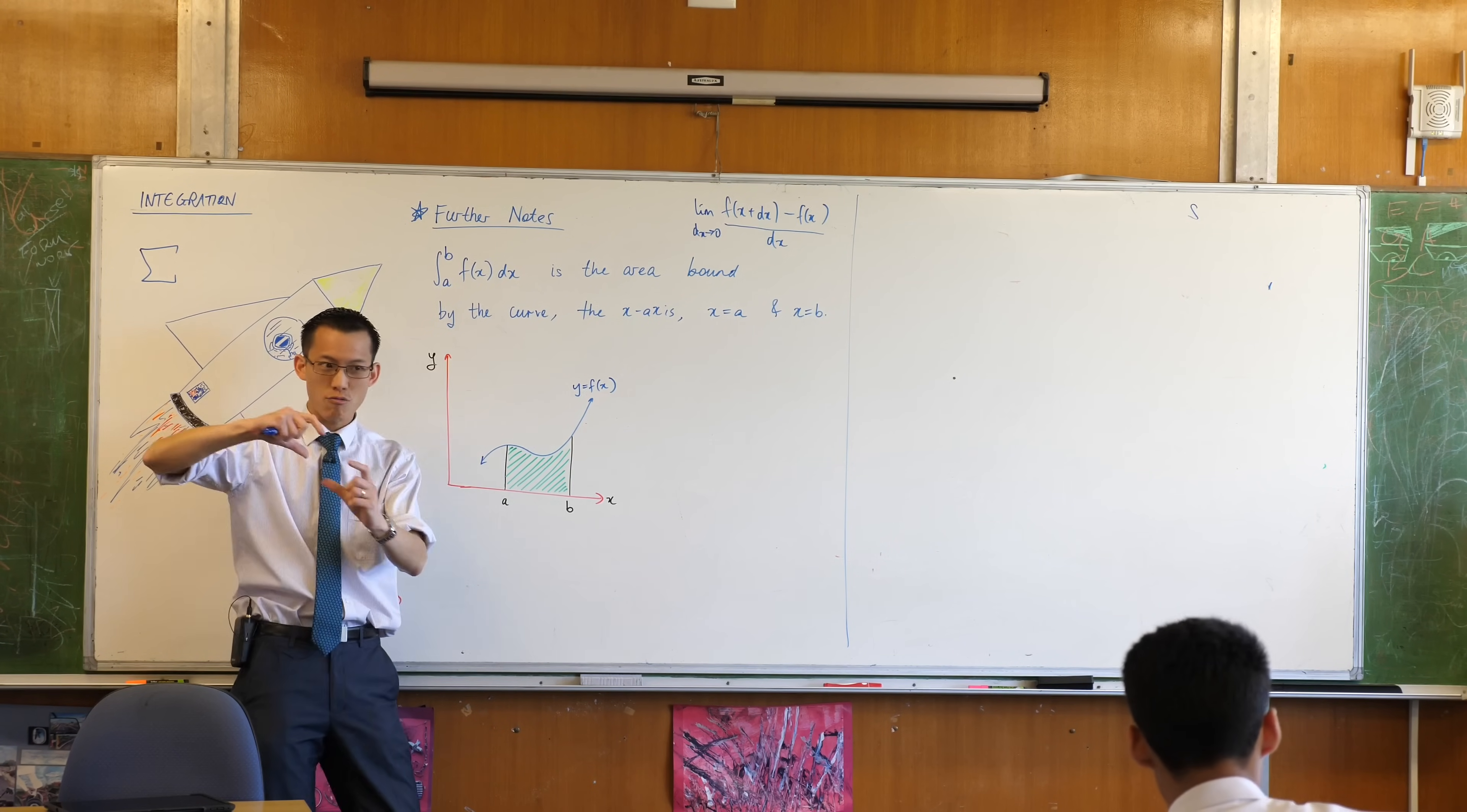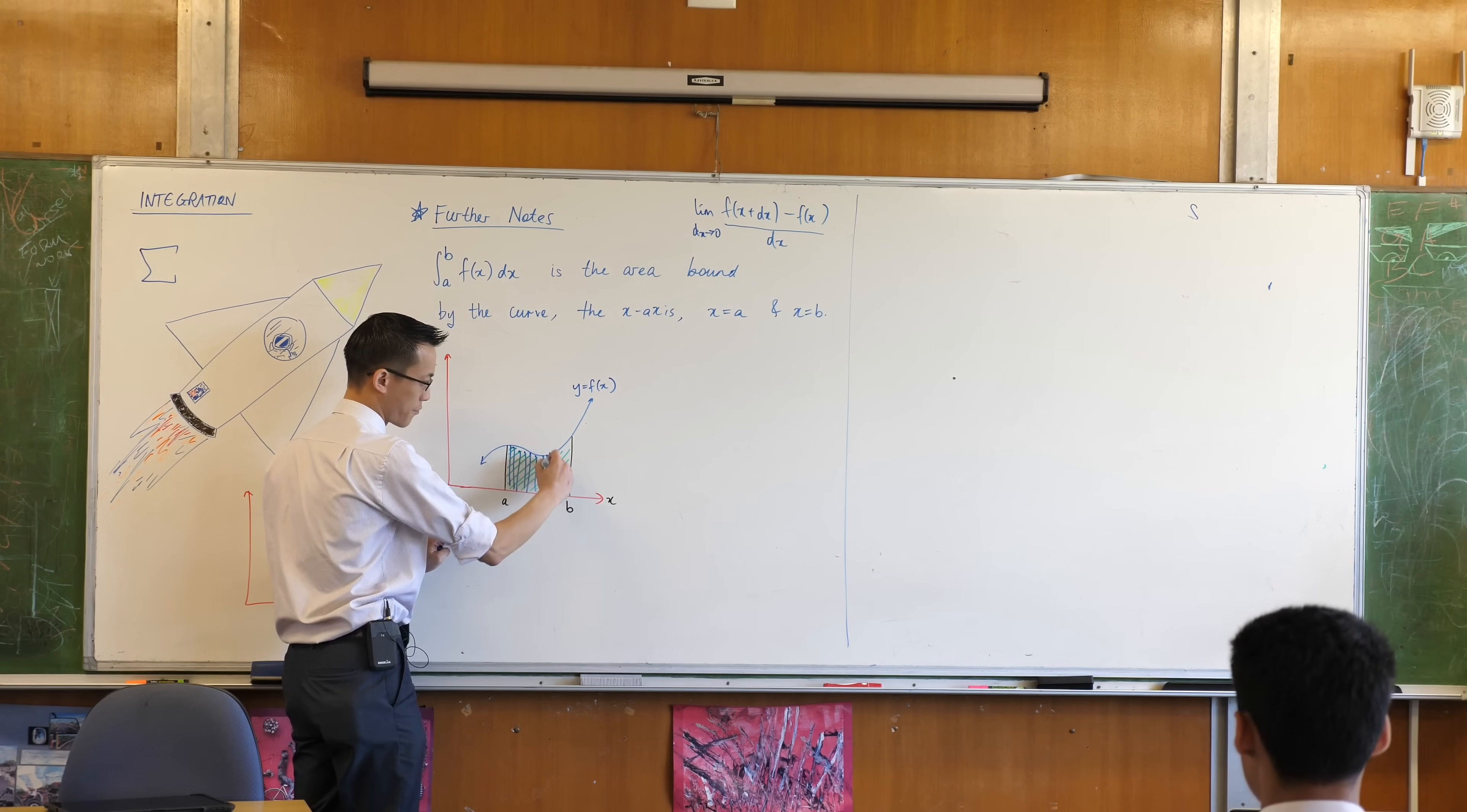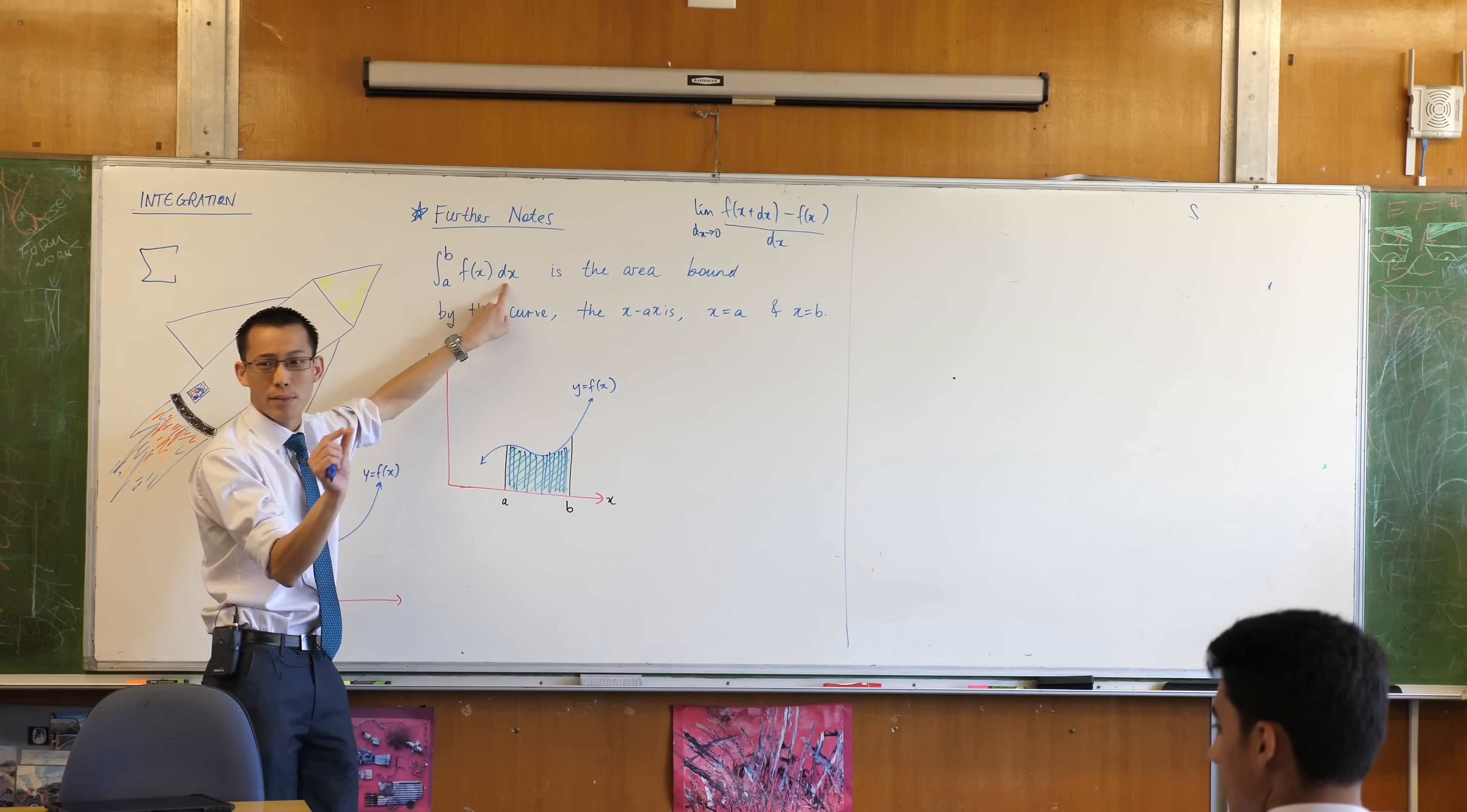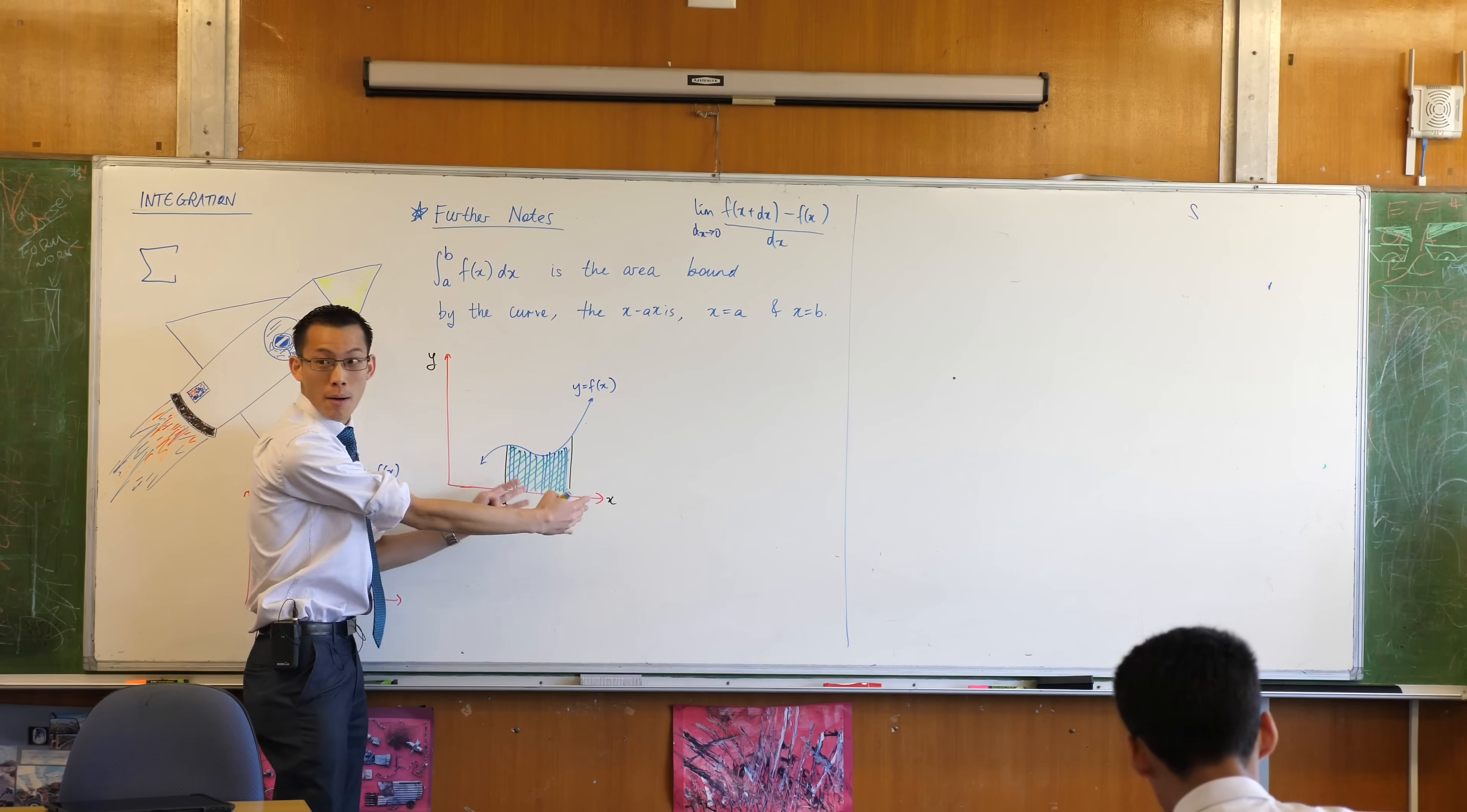Instead of thinking as nice, neat rectangles, what you have is an infinite set of infinitesimally thin rectangles, each of which has its own independent height and each of which has its own infinitesimally thin width. Now, if you just thought about one of those such rectangles, it would have no area because infinitesimally thin.